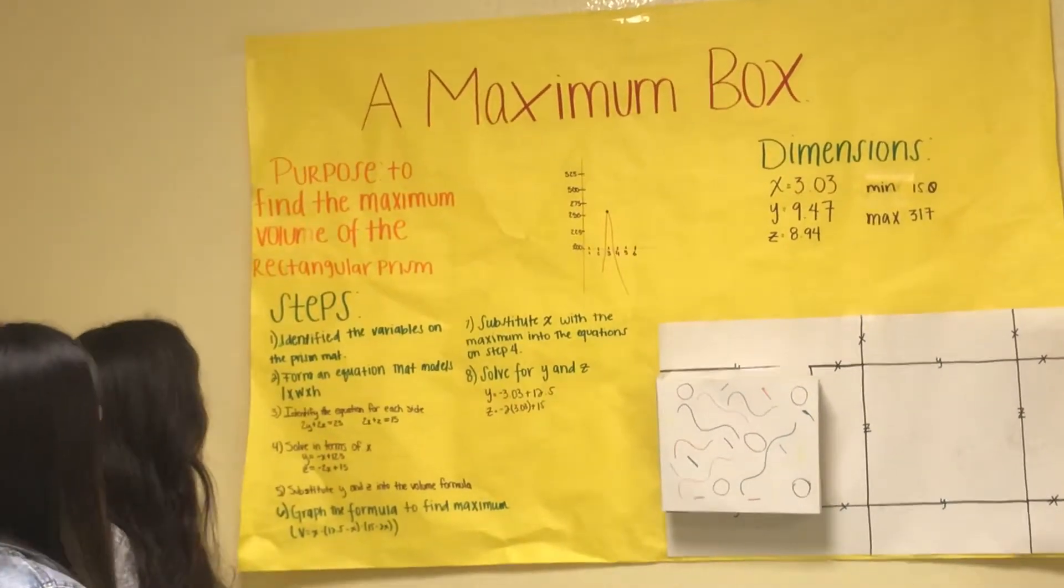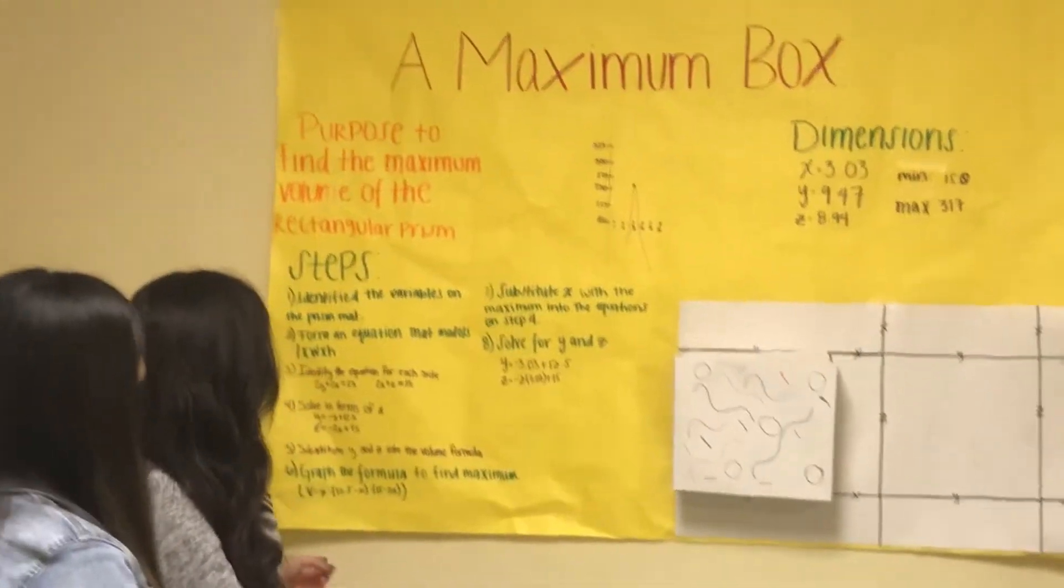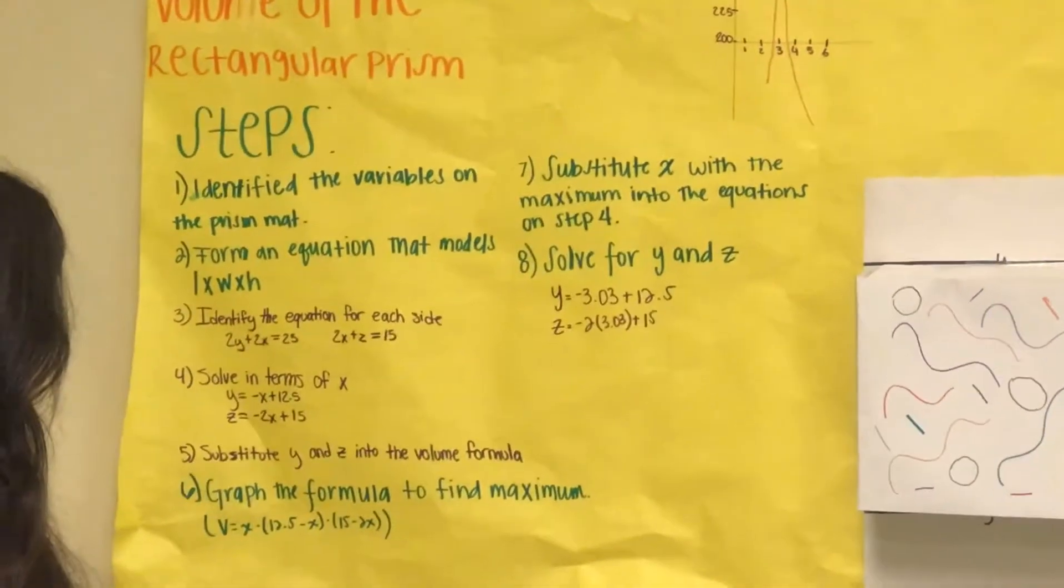A maximum box. The purpose of this project was to find the maximum volume of a rectangular prism. Step number one is to identify the variables on the prism mat.